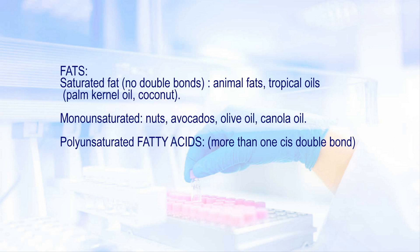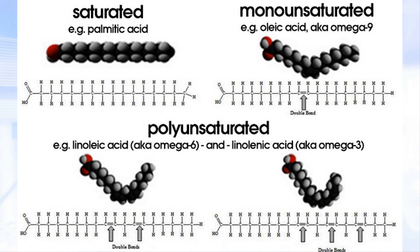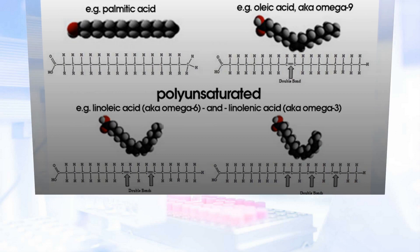Then there's the monounsaturated fats from nuts, avocados, olive oil, and canola oil. And then finally the polyunsaturated fatty acids, which have more than one cis double bond — cis meaning on the same side, versus a trans configuration where there's a hydrogen on the opposite side of the chain, which we'll get into later.